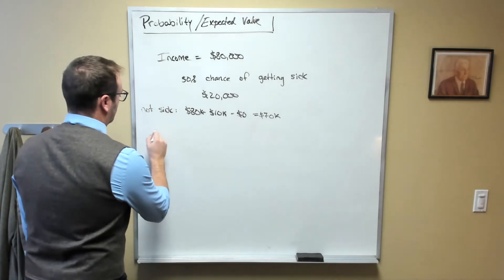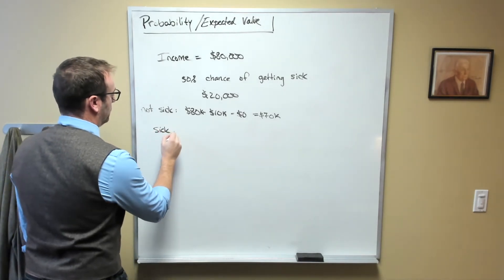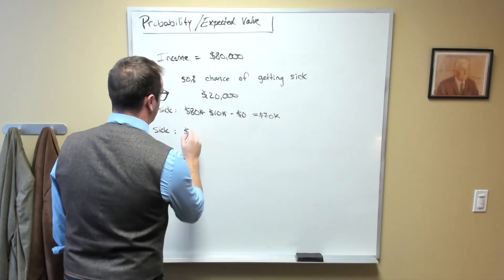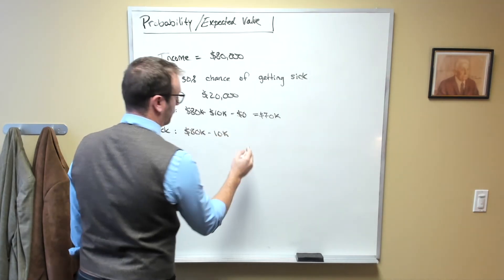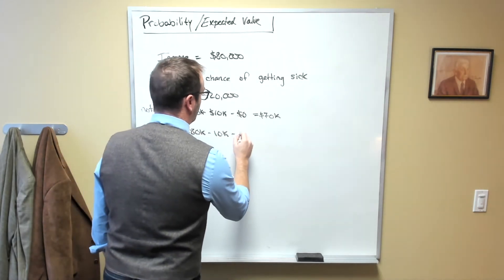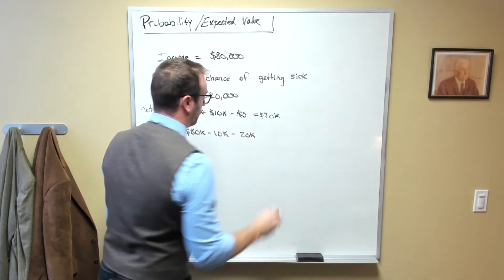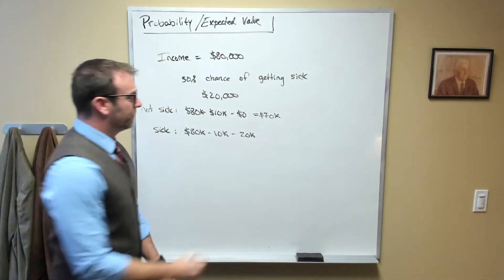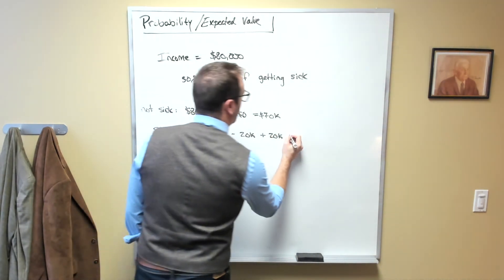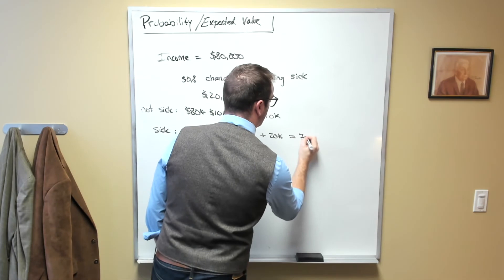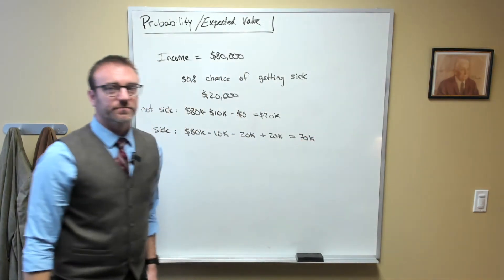You also have a probability of getting sick. And in this world, your income would be $80,000 minus the $10,000 for your insurance premium minus the $20,000 for medical bills plus another $20,000 in insurance payments and that is also equal to $70,000, okay?